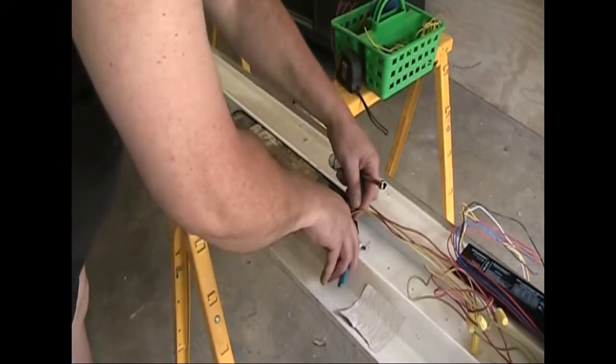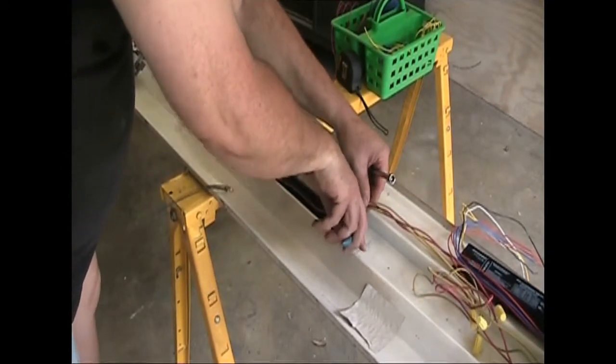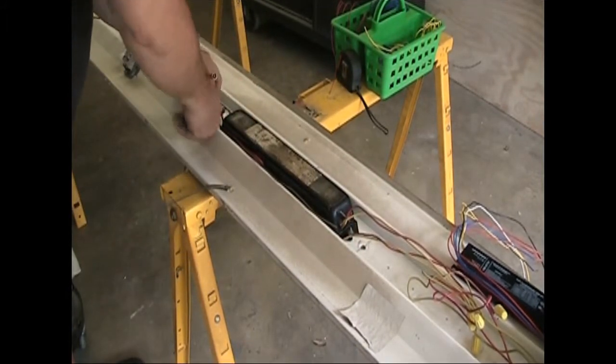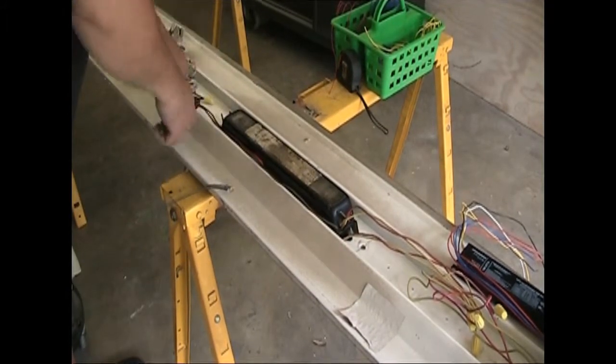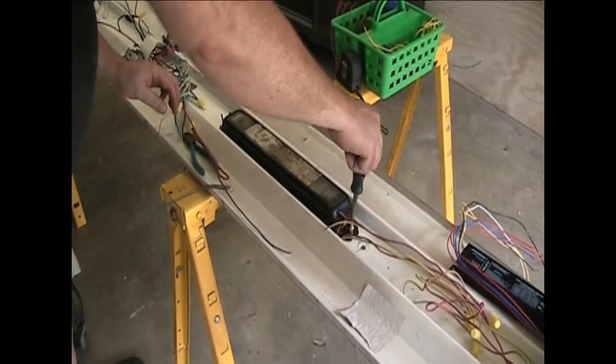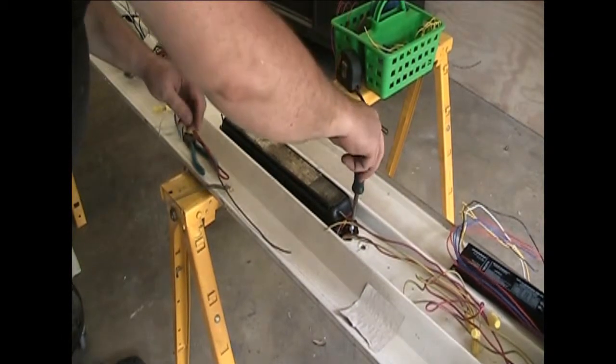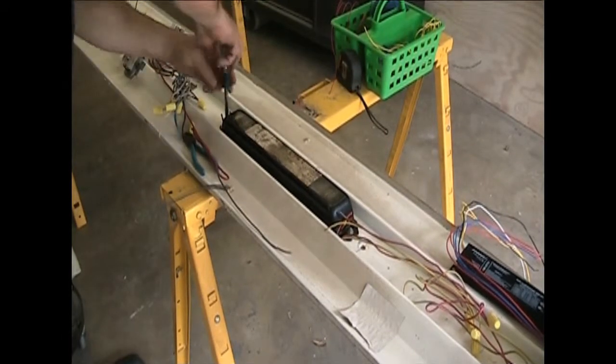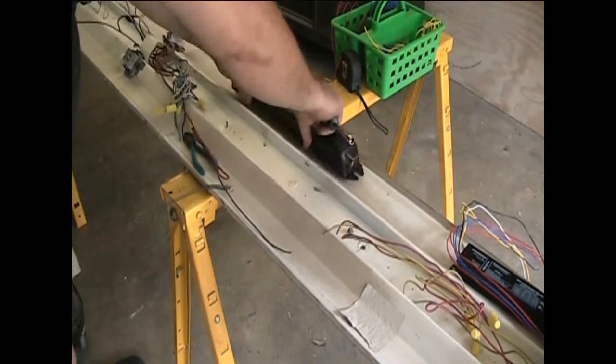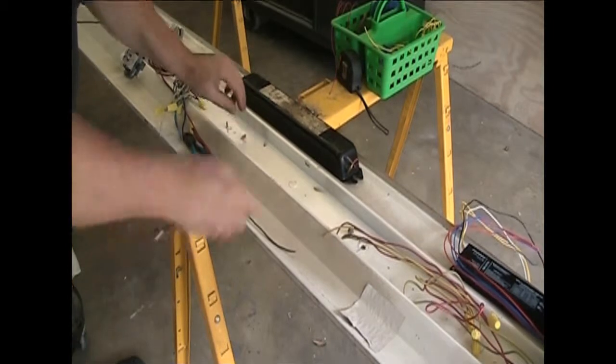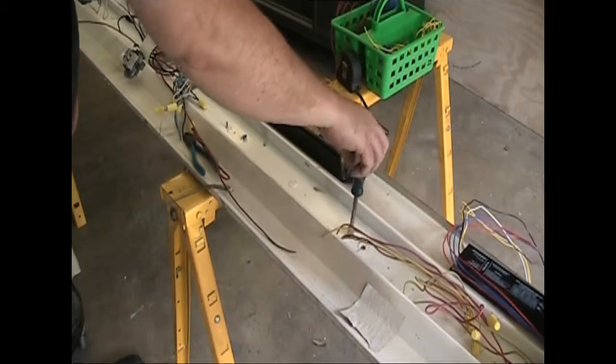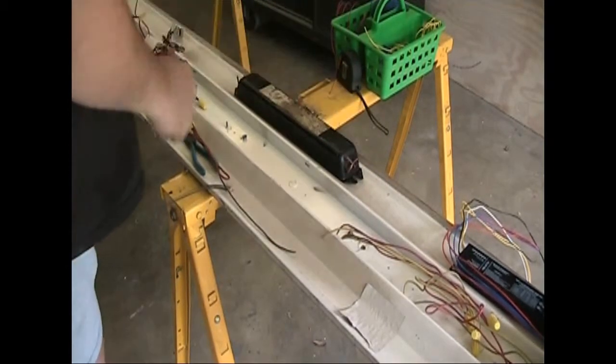First of all, what I do is I cut the wires right at the ballast. Then we're removing the bolts holding down the ballast. And then repeat it on the other side.